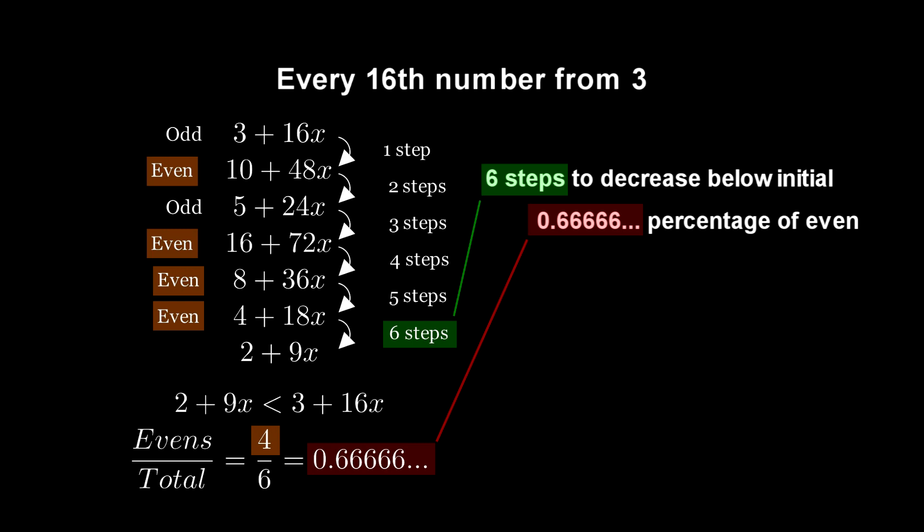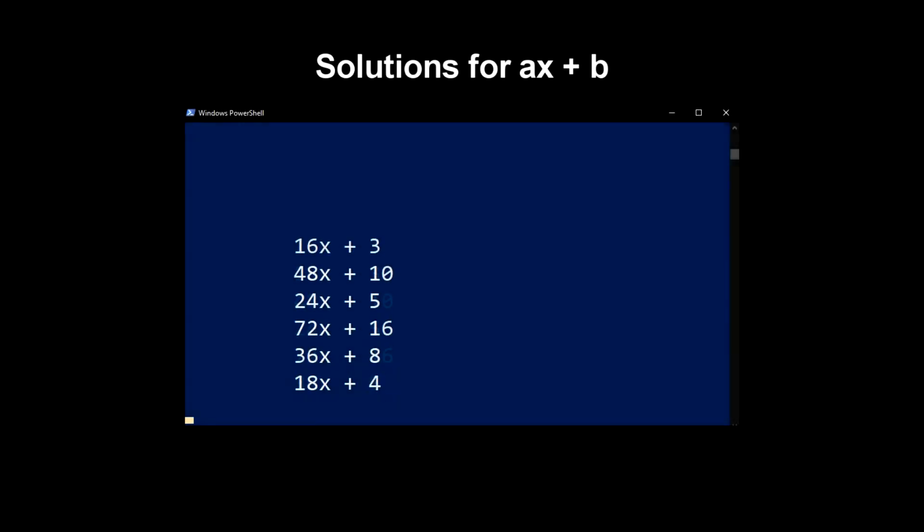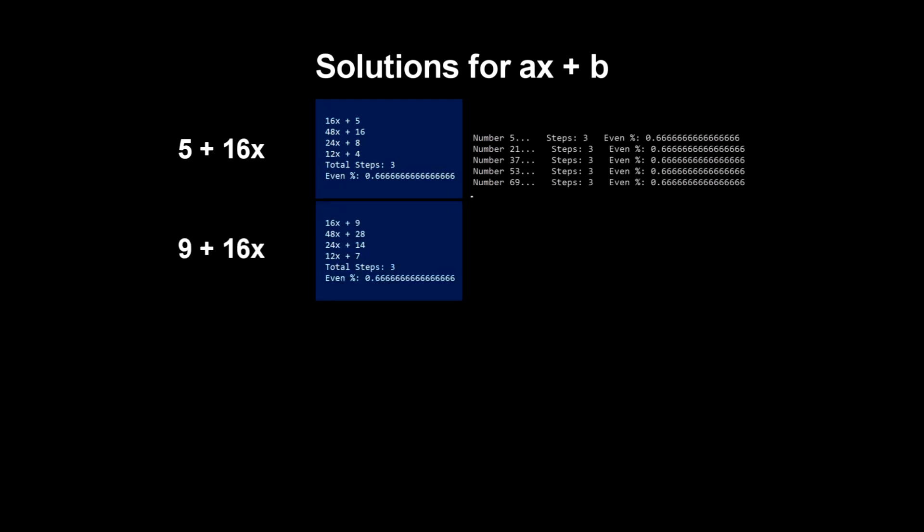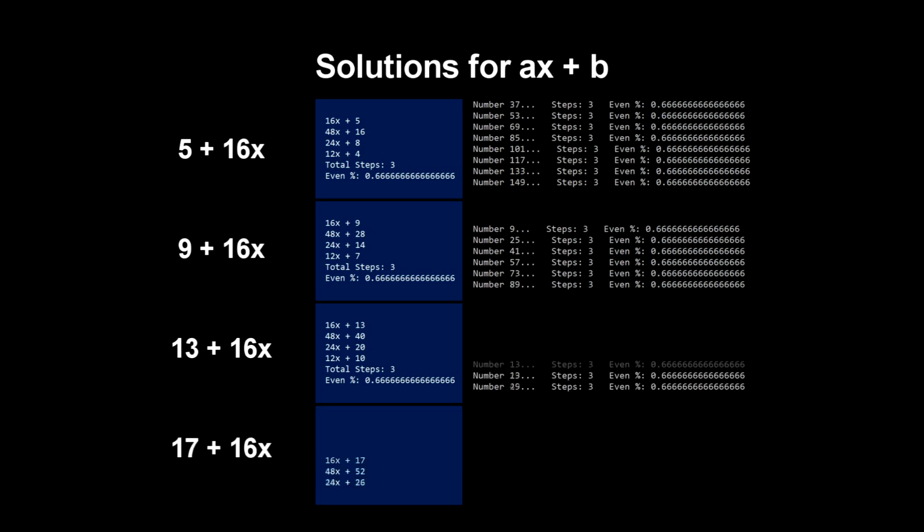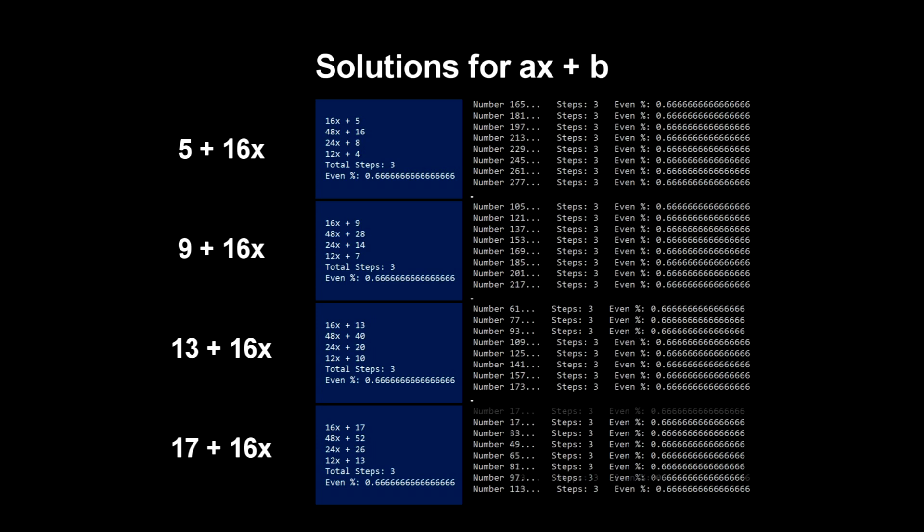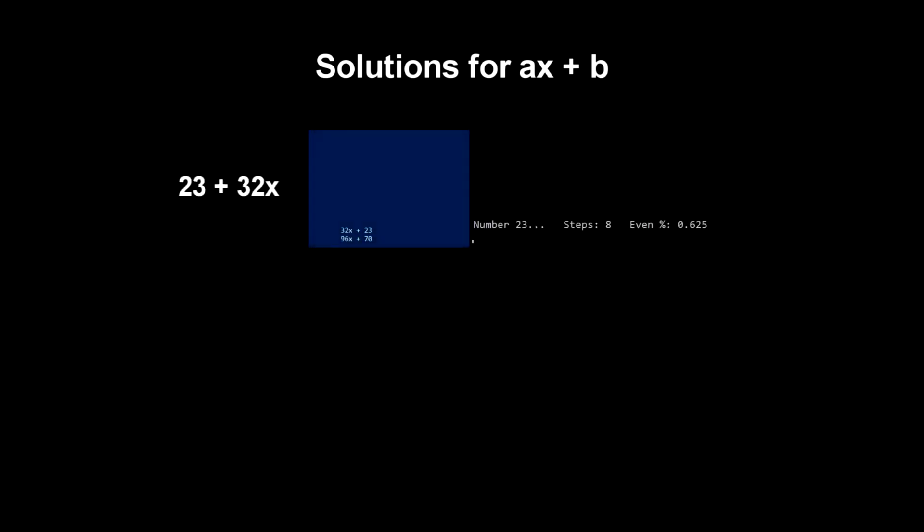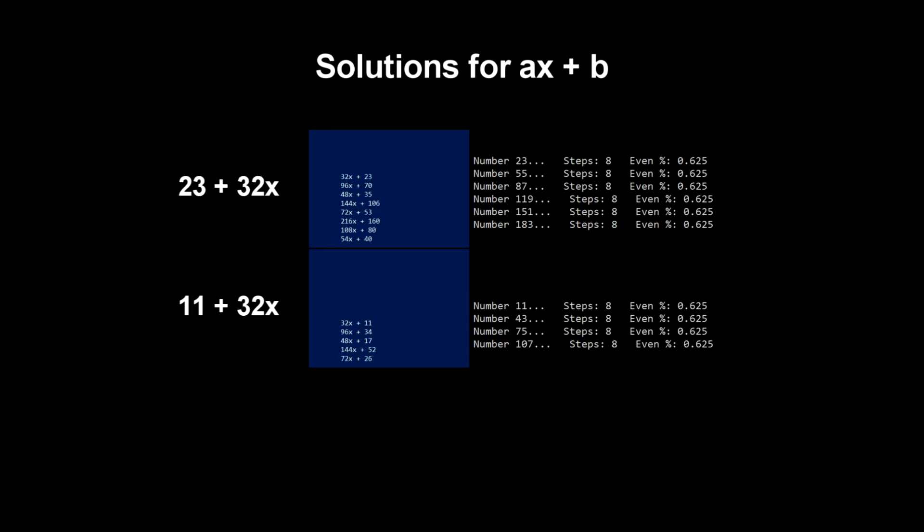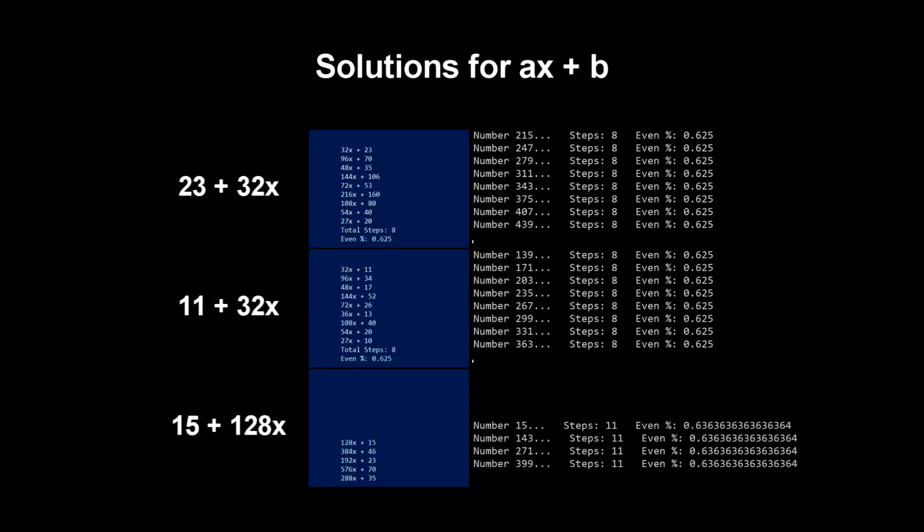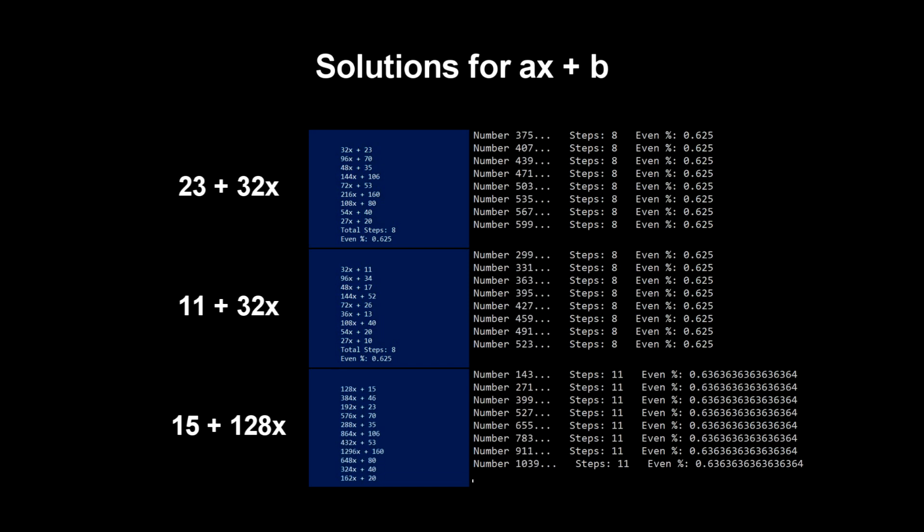Next step was to automate sequences with an input of ax plus b, which I verified with 3 plus 16x. I found that every 16th number starting at 5, 9, 13, and 17 had solutions. Every 32nd number starting at 23, and 11 worked. And every 128th number starting at 15, resolved as well. I'm sure that there are many other patterns, but I stopped here.